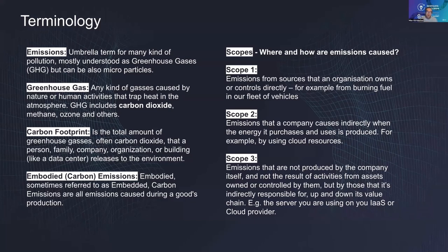When you get deep into this topic, you'll also find something called scopes. Scopes define whether you have a direct, indirect, or very indirect way of causing carbon emissions. Scope 1 means, for example, if you drove a car to Dublin — that's a scope 1 emission because you have a direct impact on causing it.